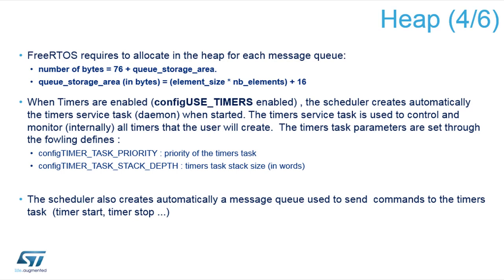When using software timers, you must enable them with a macro. During kernel initialization, a timer task is created — an additional task responsible for processing timing events. When you create a software timer, the timer task handles proper scheduling. When the proper time comes for your asynchronous function, the timer task calls your callback. You can schedule a function to run every five seconds, in 20 seconds, or in 50 milliseconds by putting it into the timer queue.